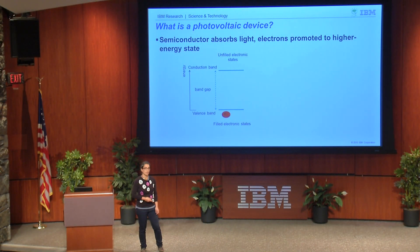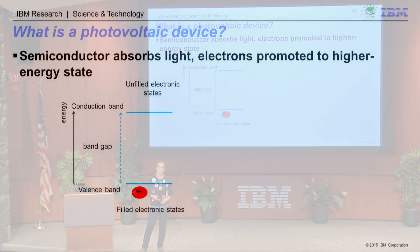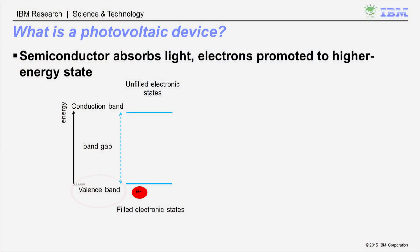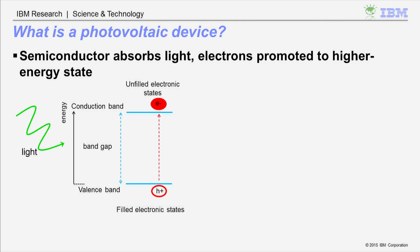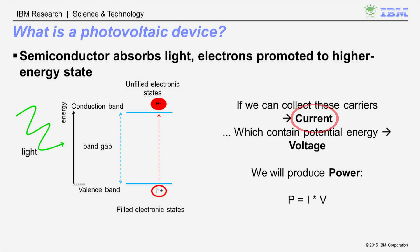We start with a semiconductor. A semiconductor contains a series of filled electronic states called the valence band. Then, separated in energy at higher energy states, are the conduction band. The valence band and conduction band are separated by an amount of energy known as a band gap. If you shine light on a semiconductor, it will absorb the light and use that energy to promote electrons from the valence band to the conduction band. And if we can collect those electrons, we can generate a current.